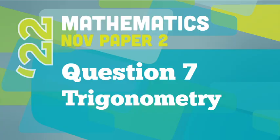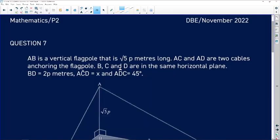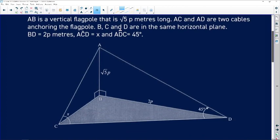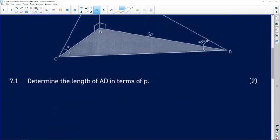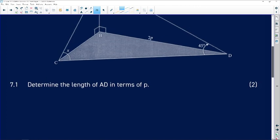Let's take a closer look at question 7 that applies ideas of trigonometry from the metric paper of 2022, paper 2. AB is a vertical flag pole that is √5p meters long. AC and AD are two cables anchoring the flagpole. B, C, and D are in the same horizontal plane. BD equals 2p meters, angle ACD equals x, and angle ADC equals 45 degrees.